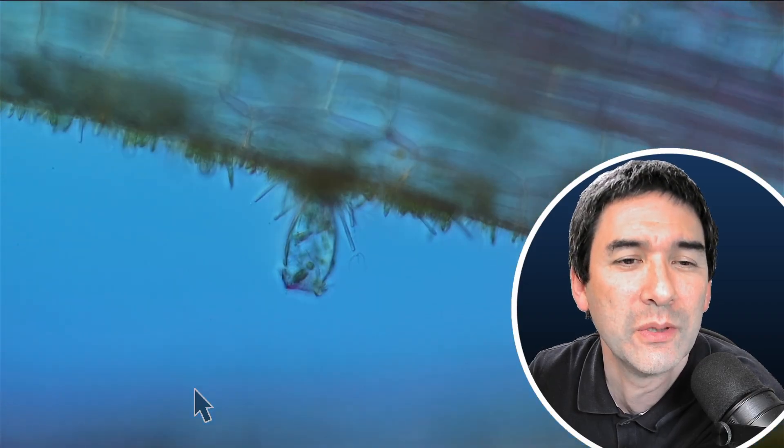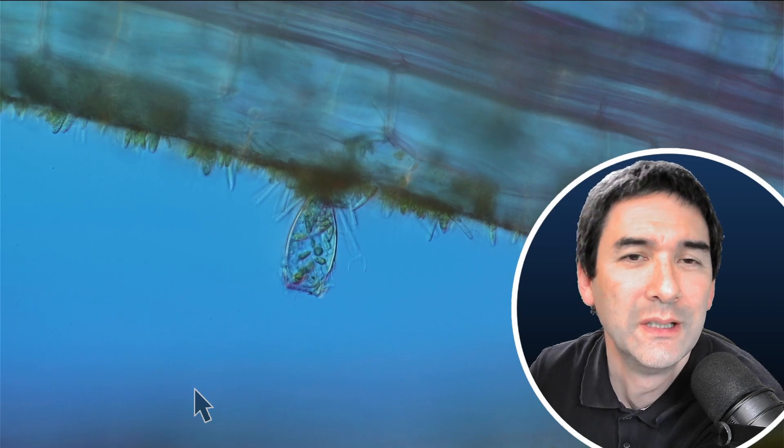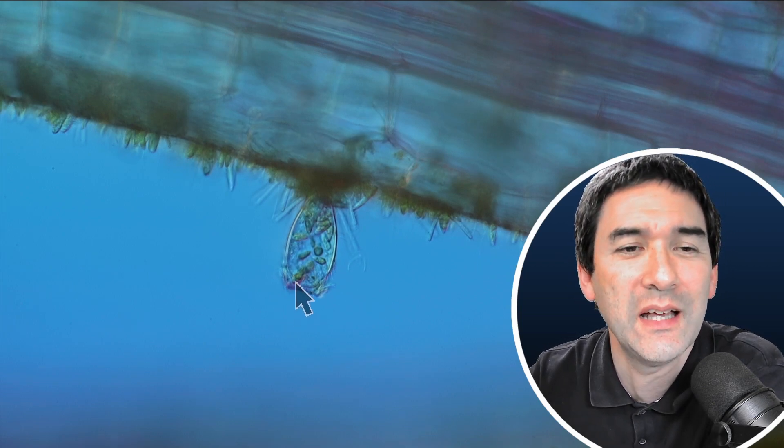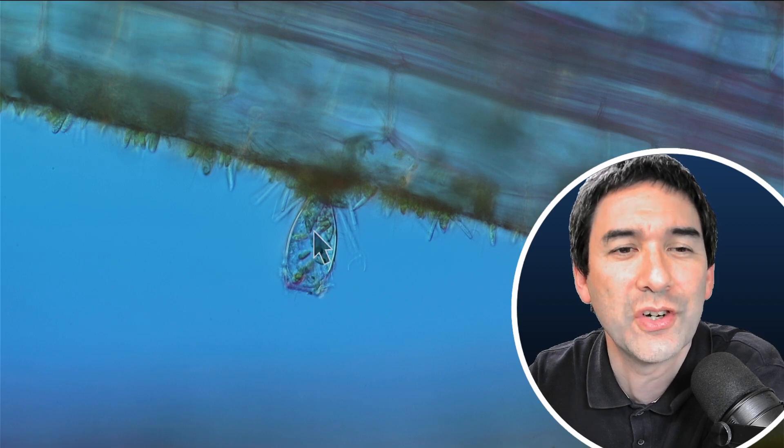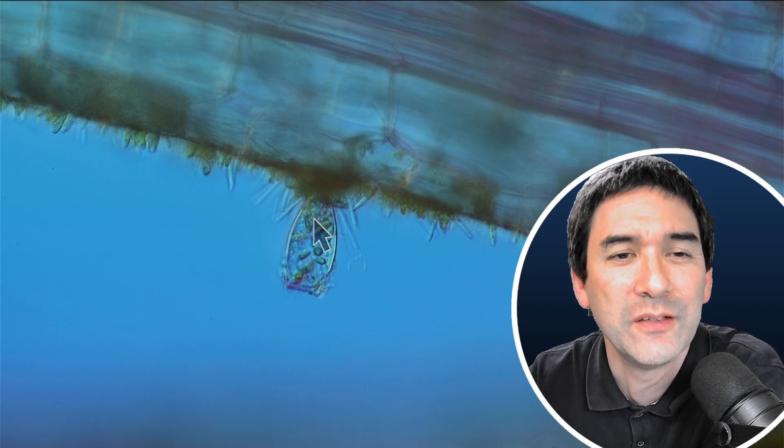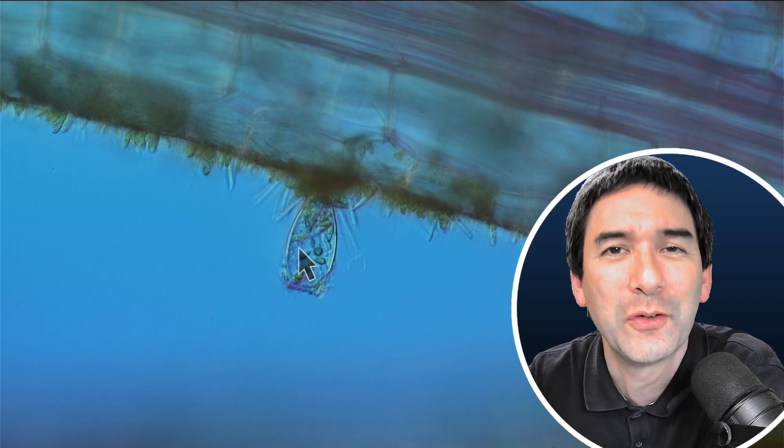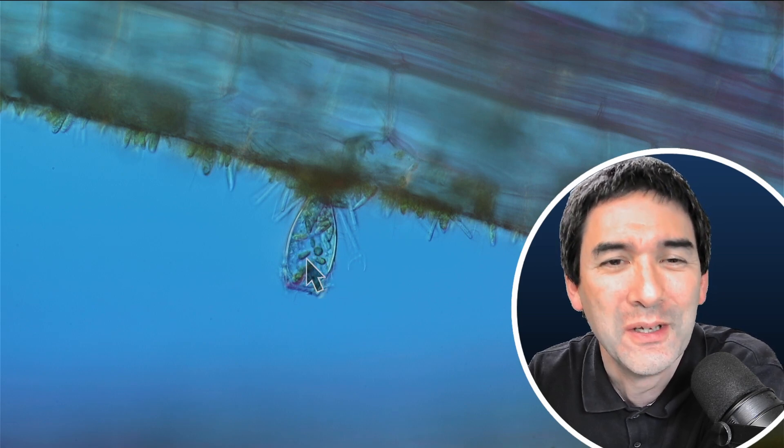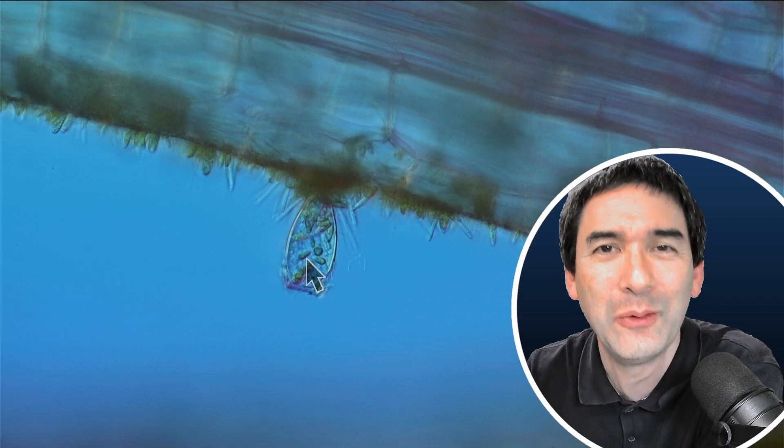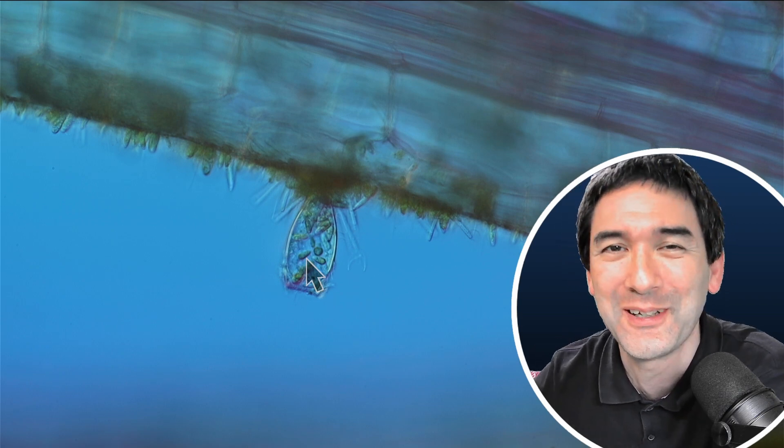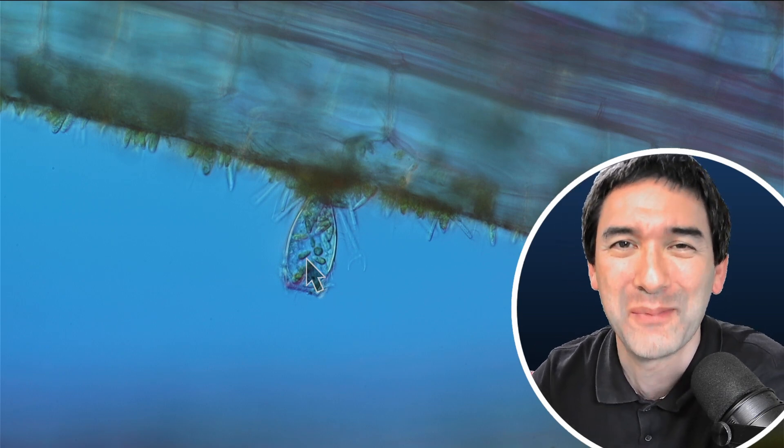Here we have what appears to be a dead rotifer, and you can see those green structures inside—that's the food it has eaten. For whatever reason it stopped living. But at least we're able to observe better what's inside this organism. Just wanted to share this observation with you. Wish you all the best, happy micro-hunting as always. See you around next time, bye-bye.